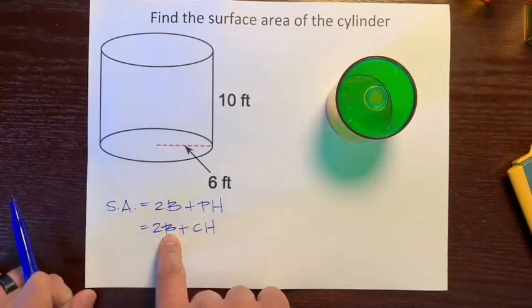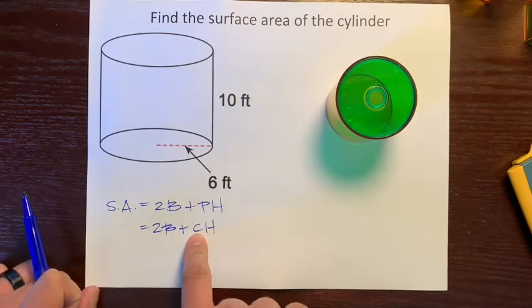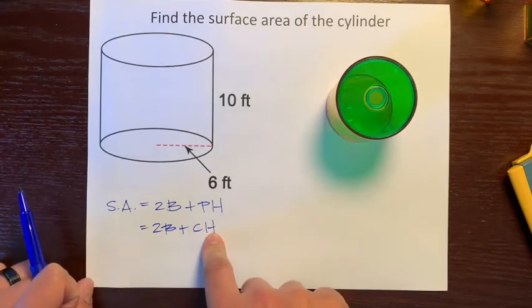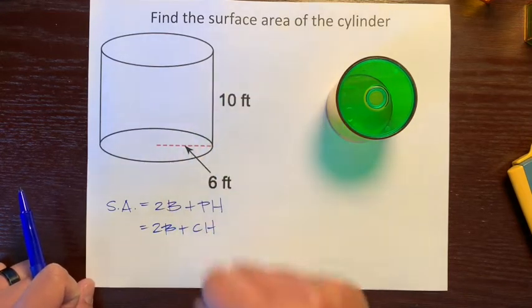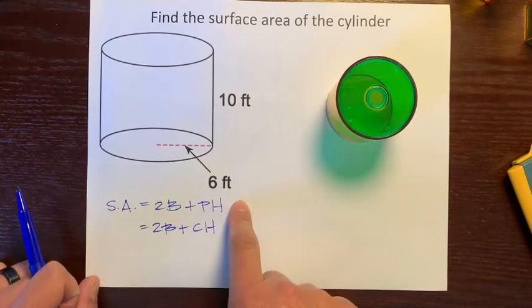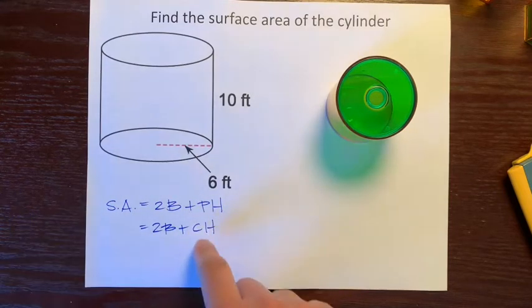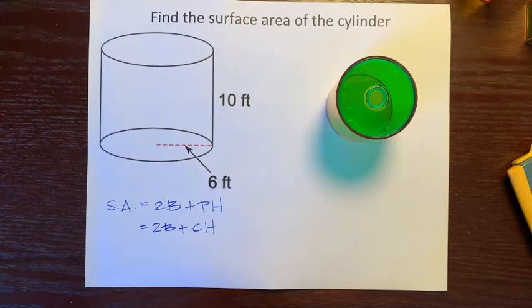The B stands for base area, the C stands for circumference of the base, and the H is still the distance between the two bases. We're still using the same formula, we're just changing a letter, but it still does the same thing.